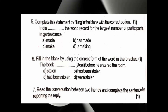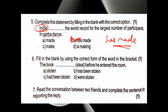Fifth question: 'India dashed the world record for the largest number of participants in Garba dance.' This record was achieved recently, so we use present perfect tense. India is a singular subject, so we use 'has'. Correct answer: 'India has made the world record for the largest number of participants in Garba dance.' 'Has made' means present perfect tense, because this happened recently.